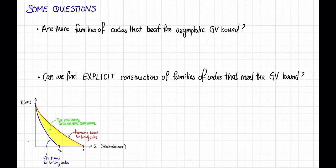This picture might leave us with some questions. First, we might wonder, are there families of codes that beat the asymptotic GV bound? That is, is there a family of codes with rate and distance that lives here, sort of above the blue curve? Or here, or here, or here?